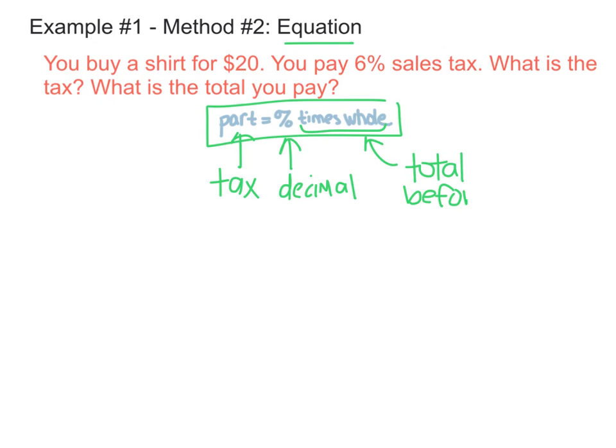So this is our total before the tax. You could add this to the bottom of your page as well, if you have some space down there. So again, you buy the shirt for $20. So that's our total before tax. We're paying a 6% sales tax. So that's 0.06 as a decimal. And then we're looking for a tax in our total. So we're going to say our tax is equal to our percent written as a decimal times our pre-tax total.